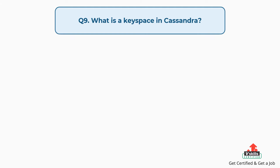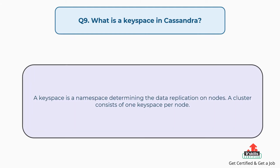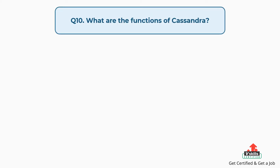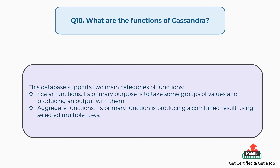Question number nine: What is a keyspace in Cassandra? A keyspace is a namespace determining the data replication on nodes. A cluster consists of one keyspace per node. Question number ten: What are the functions of Cassandra? This database supports two main categories of functions. Scalar functions, whose primary purpose is to take some group of values and produce an output with them. Aggregate functions, whose primary function is producing a combined result using selected multiple rows.